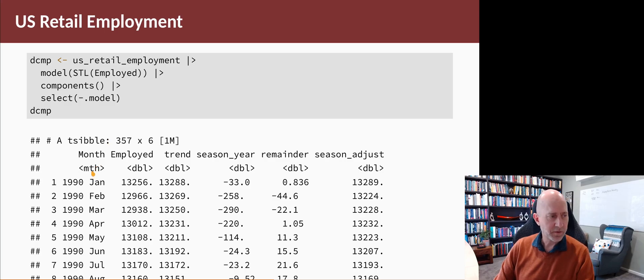We see here that we've got the original data in the first two columns, and then these new columns: Trend, Season_Year, Remainder, and Season_Adjust. We're just going to look at Season_Year and Season_Adjust. These two things together add up to the original data.